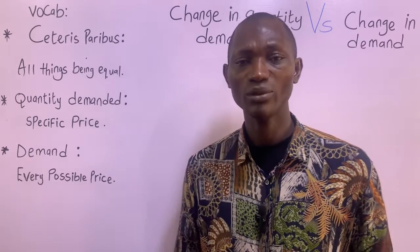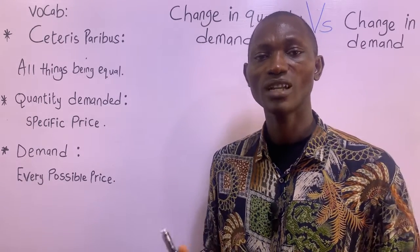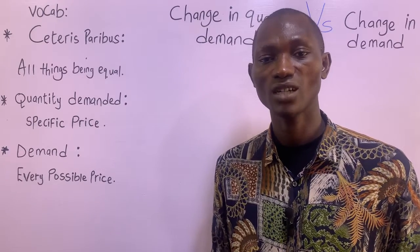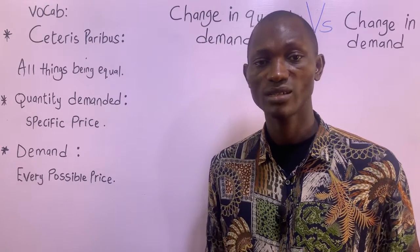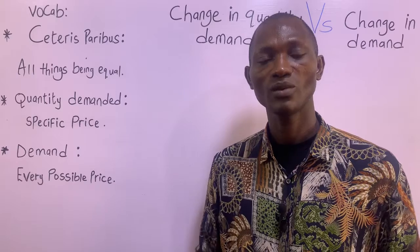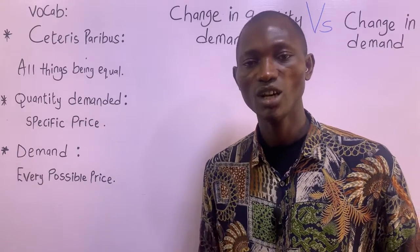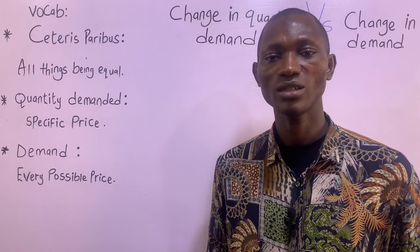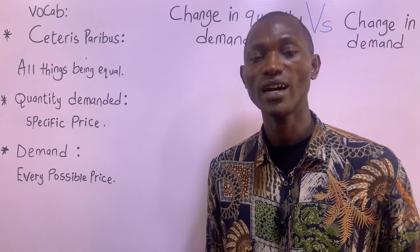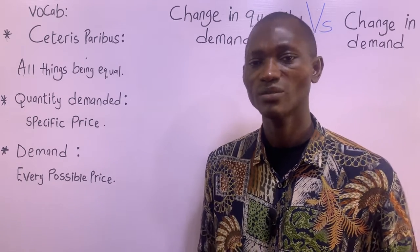For example, there are many factors that affect the quantity demanded of a commodity, such as the price of the commodity, price of other commodities, income of the consumer, festive period, the number of buyers, population, and all that.